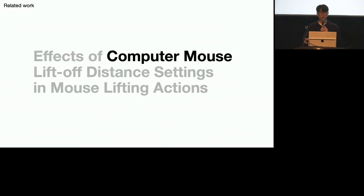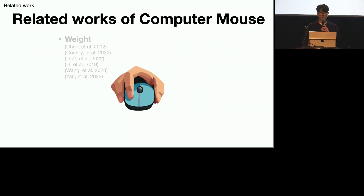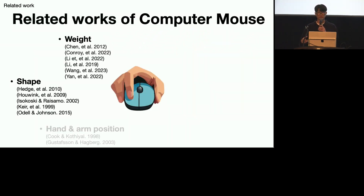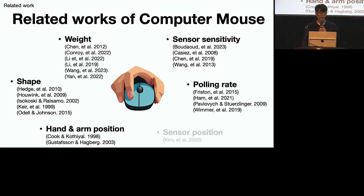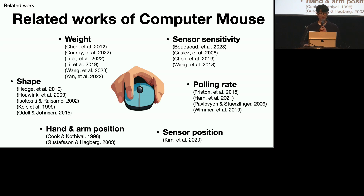Naturally, the search for optimal performance of the mouse device has been an important issue, especially for competitive gamers. There are various mouse design parameters that can affect user performance — for example, weight and shape of the mouse, sensor sensitivity known as DPI, polling rate, and sensor position of the mouse.